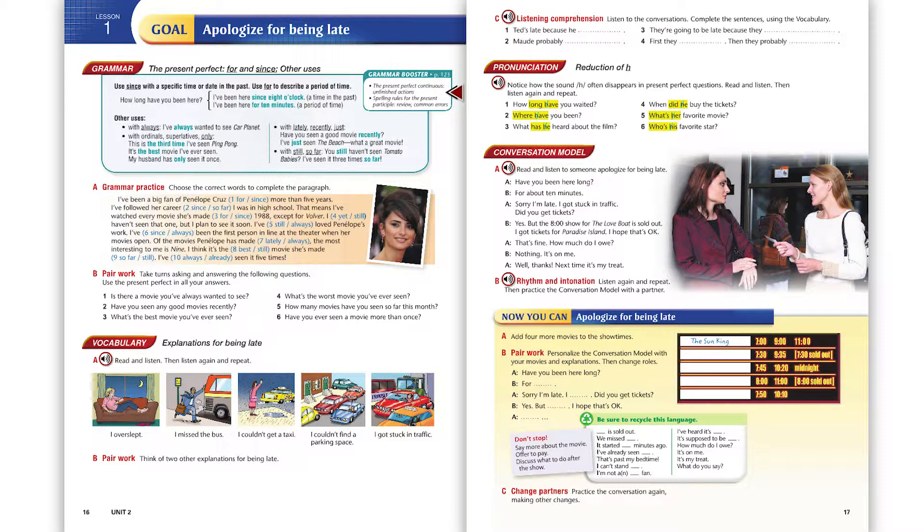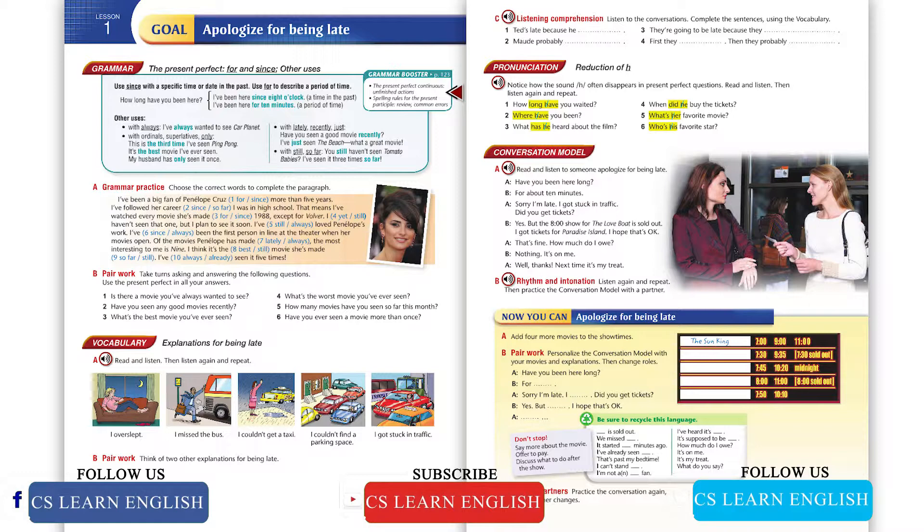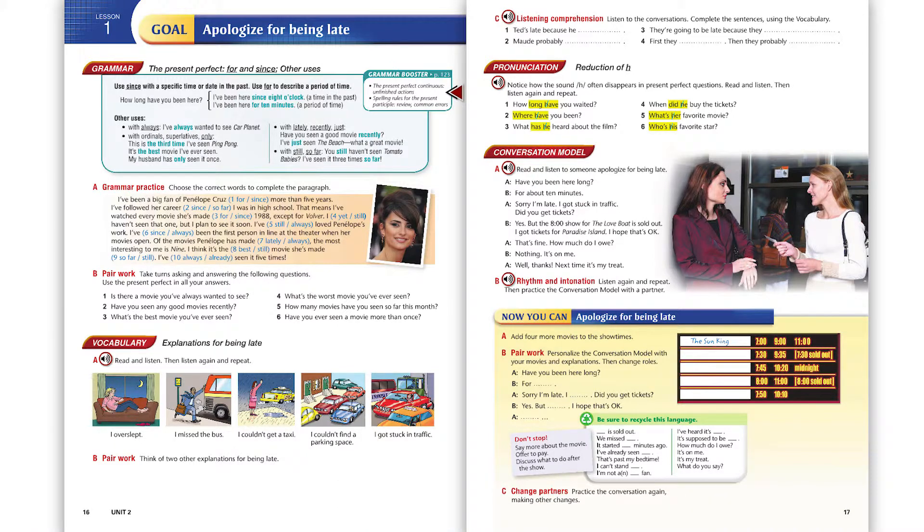Page 17. Conversation model. Exercise A. Read and listen to someone apologize for being late. Have you been here long? For about 10 minutes. Sorry I'm late. I got stuck in traffic. Did you get tickets? Yes, but the 8 o'clock show for The Love Boat is sold out. I got tickets for Paradise Island. I hope that's okay. That's fine. How much do I owe? Nothing. It's on me. Well, thanks. Next time it's my treat.